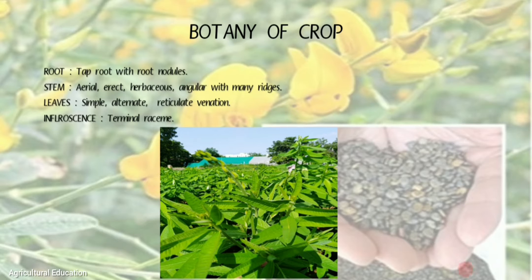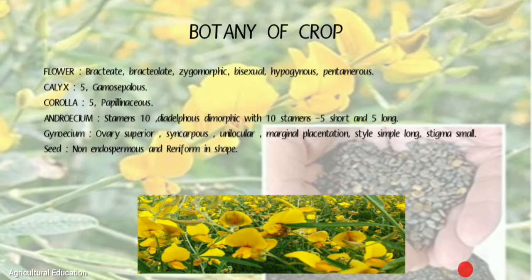Botany of the crop: Root — taproot with root nodules. Stem — aerial, erect, herbaceous, angular with many ridges. Leaves — simple, alternate, reticulate venation. Inflorescence — terminal raceme. The flower of sunhemp is bractate, bracteolate, zygomorphic, bisexual, hypogynous. The pentamerous calyx is five-lobed and the corolla is five-petalled, papilionaceous.